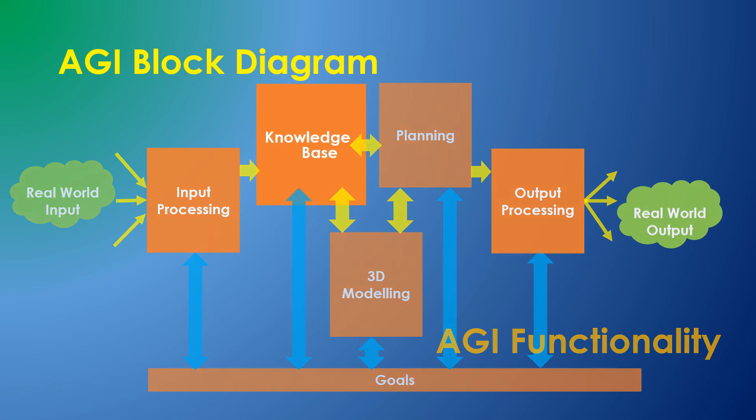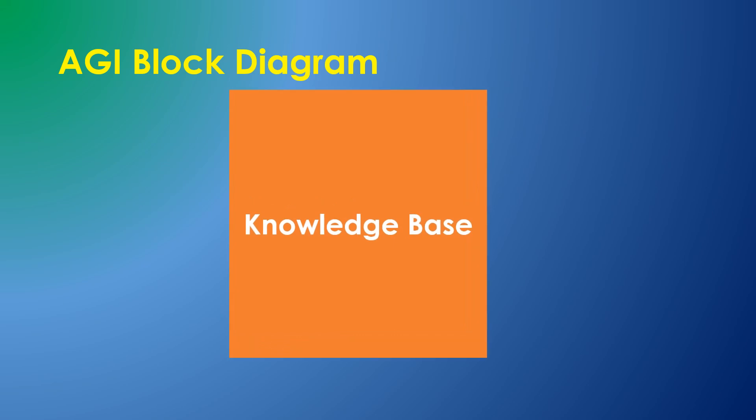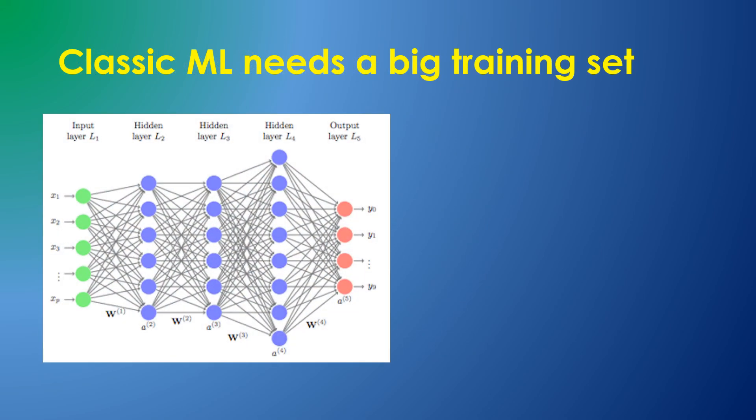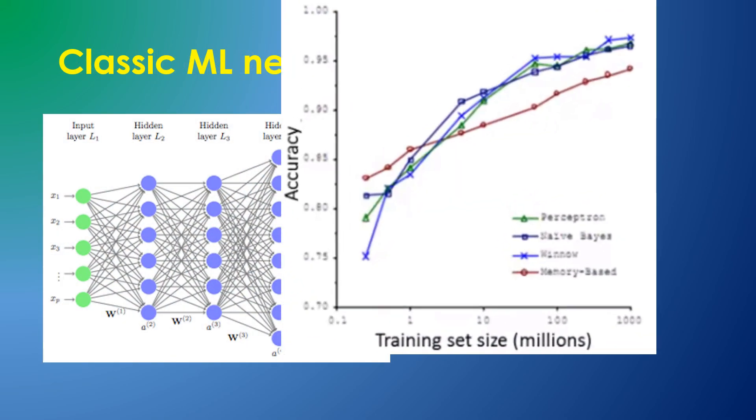For AGI we'll need the ability to learn new things with speed and accuracy. The huge training sets needed for deep learning are great for big data correlation tasks but obviously don't fit with human-like learning.